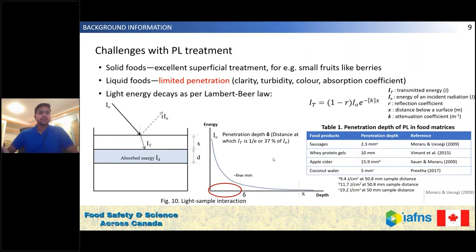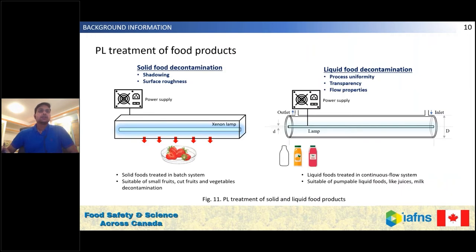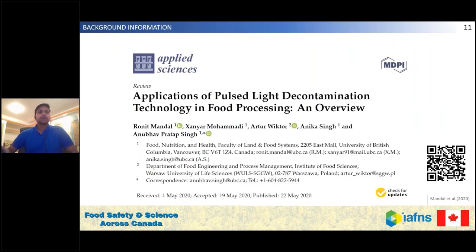This is a major challenge for pulse light processing — we want a thin profile treatment so that the process is uniform. For solid food decontamination, challenges include the shadowing effect on microorganisms and surface roughness. Solid foods are treated in a batch system and it is suitable for small fruits, cut fruits, and vegetable decontamination. For liquid foods, process uniformity governs the treatment; transparency and flow properties are important. Liquid foods are passed through an inlet and collected from the outlet in a continuous flow system, and it is suitable only for pumpable liquid foods like juices and milk, which should be passed in a thin film.